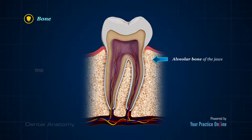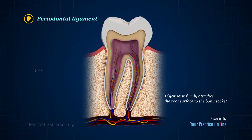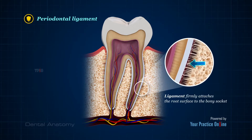The roots of the teeth are anchored in bony sockets within the alveolar bone of the jaws. The Gingiva, or gums, is soft tissue that surrounds the teeth and covers the surface of the jaws in the oral cavity. The Periodontal ligament firmly attaches the root surface to the bony socket, holding the tooth in place.